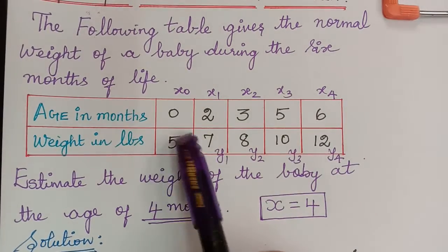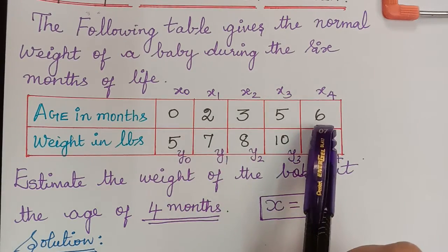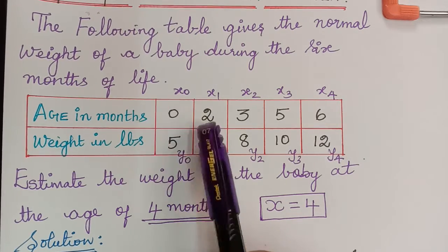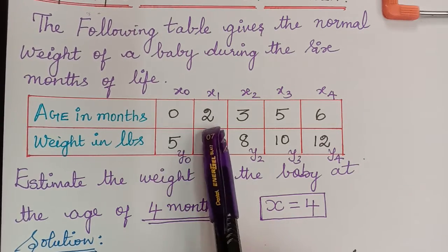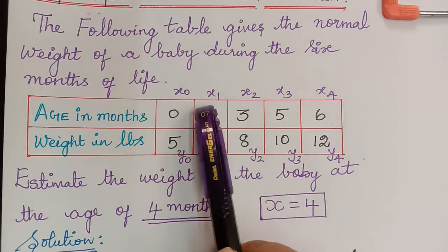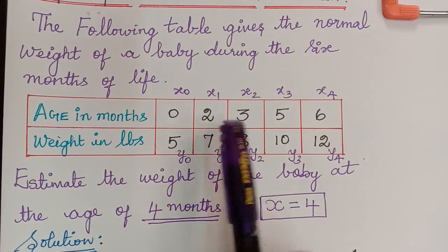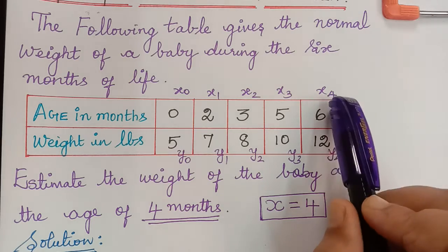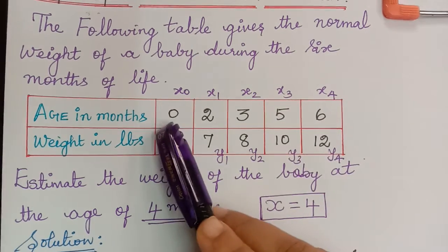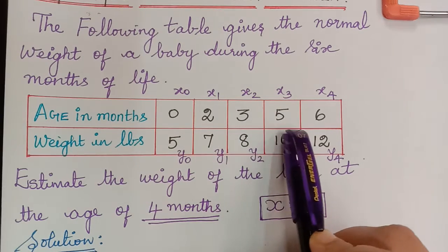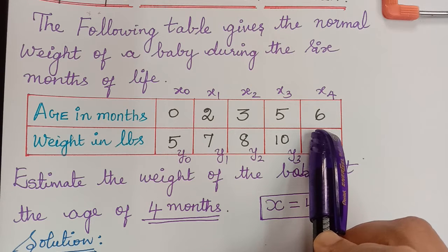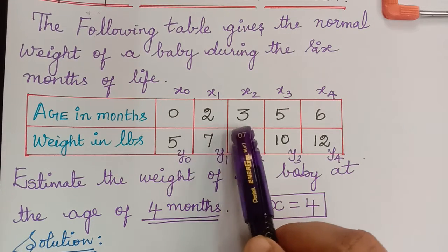Here the given values are not equidistant. That is, the difference between x1 and x0 is 2, whereas the distance between x2 and x1 is 3 minus 2 which is 1. The difference between x3 and x2 is 2 again, and the distance between x4 and x3 is 1. So we observe that the values are not equidistant. If the values were equidistant, we could easily interpolate using Newton's forward or backward formula, but here they are not equidistant.